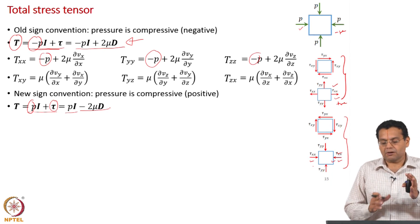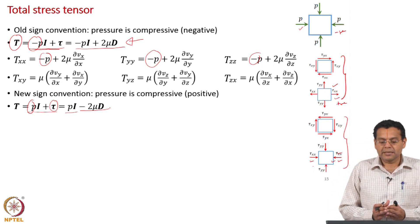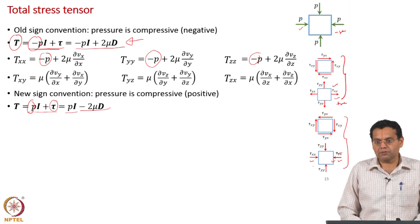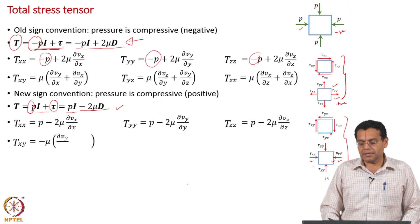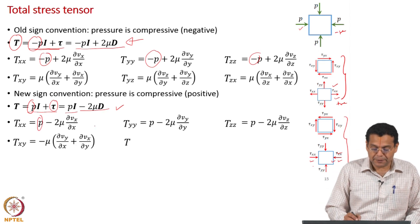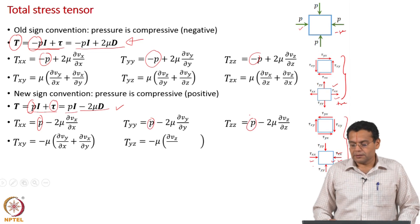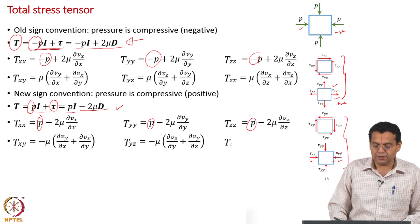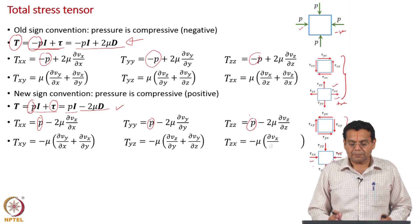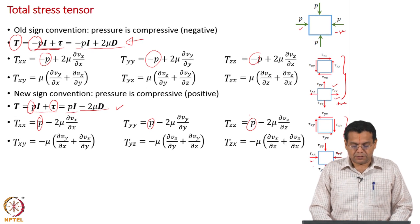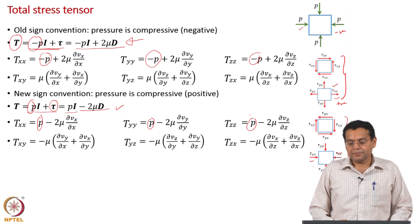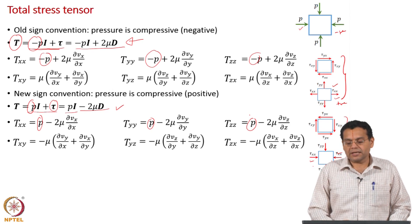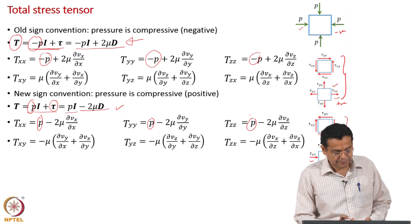In terms of hierarchy: first all discussion was based on one-dimensional Newton's law of viscosity, then the previous slide extended that to the three-dimensional form, and now we further extend it by writing the total stress tensor. In the new sign convention, simply add plus p to the normal stress components. To summarize: pressure is compressive, but it is negative in the old sign convention and positive in the new sign convention.